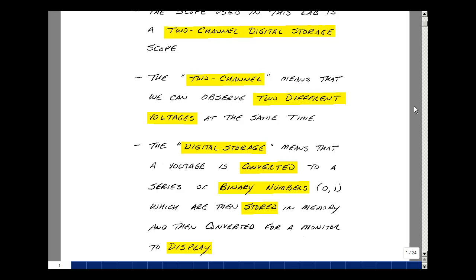The two-channel means that you can observe two different voltages at the same time. And digital storage means that the voltage is converted to a binary number, stored, and then displayed on the oscilloscope face.